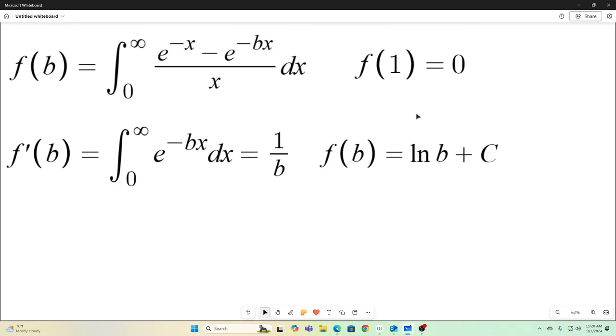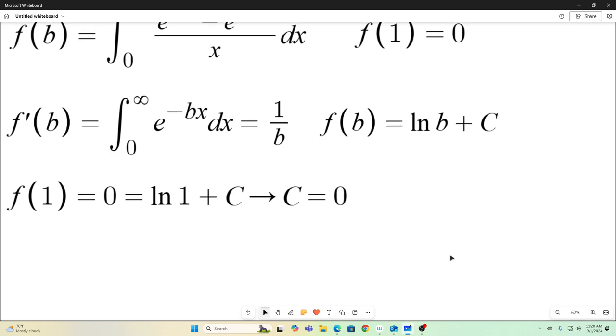And now we can use the fact that f of b when b is one is equal to zero. So we have f of one equals zero, which is equal to the natural log of one plus c. Of course, natural log of one is zero. So that implies that our c is equal to zero. That means f of b is just natural log b.